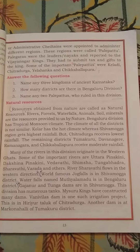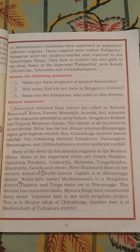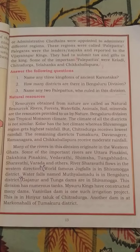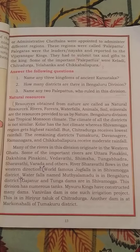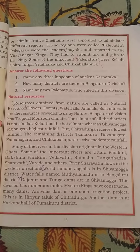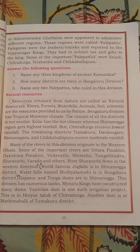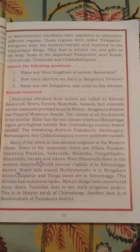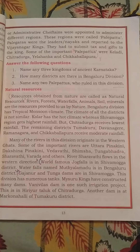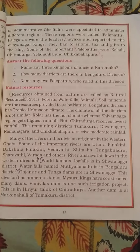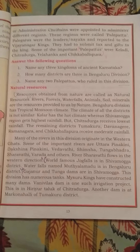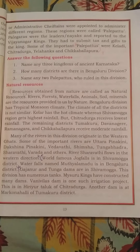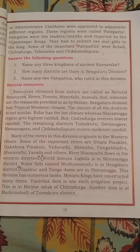Many of the rivers in this division originate in the Western Ghats. Some of the important rivers are Uttarapinakini, Dakshinapinakini, Vedhavati, Shimshah, Tungabhadra, Sharavati, Varadha, and others.